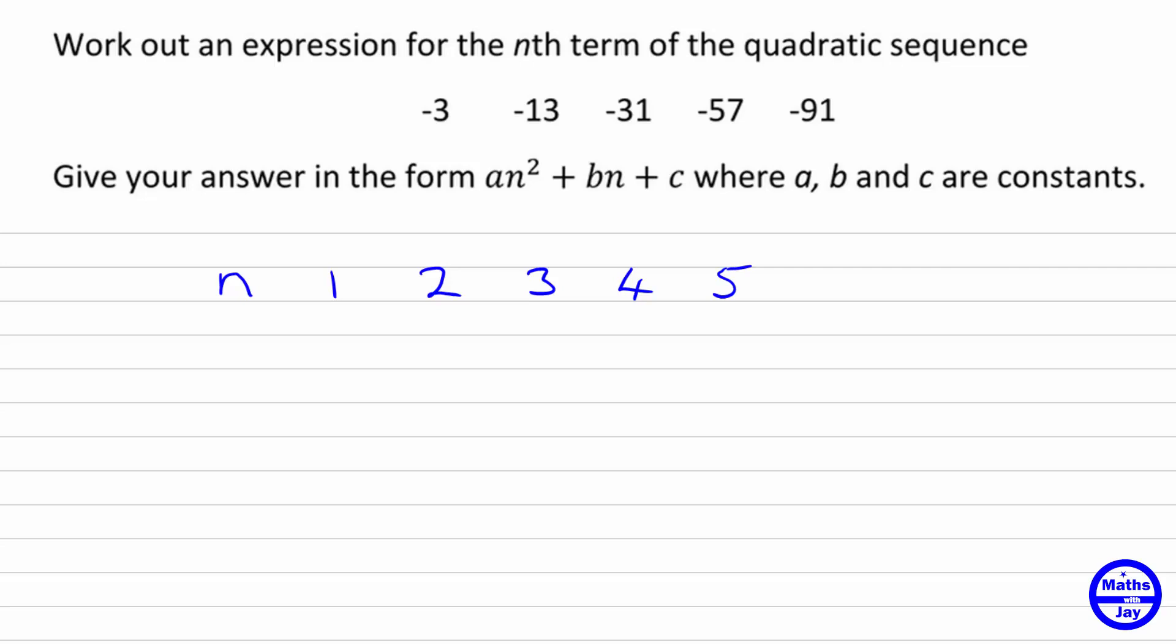Let's use the letter t to represent the term. So we know the first term is negative 3, the next negative 13, then we've got negative 31, negative 57 and negative 91.